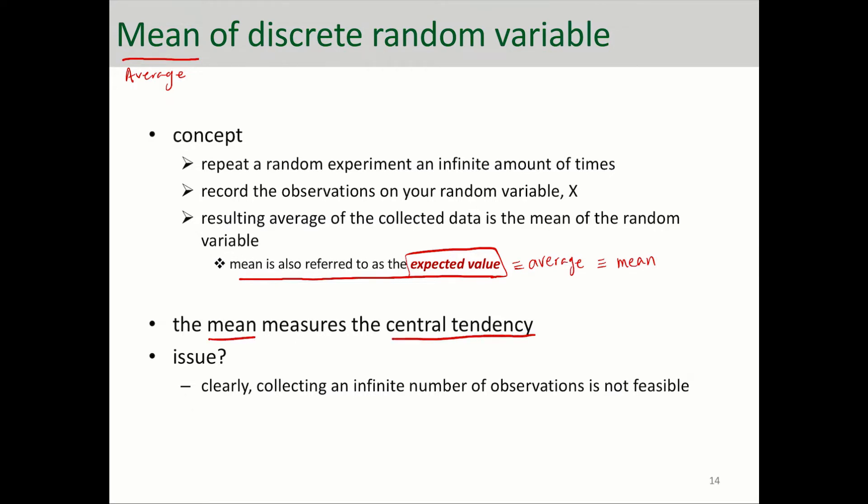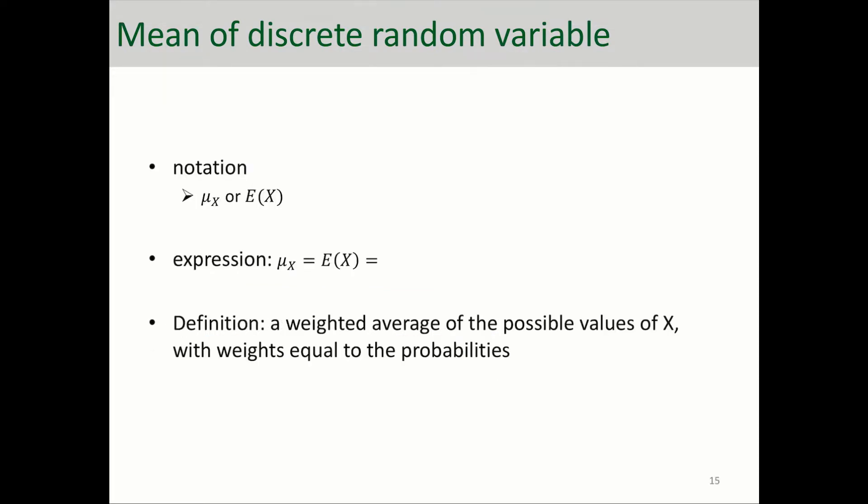As you're familiar with, the mean or average measures the central tendency of a random variable. What's the notation for average or mean of a random variable? It is μ_X or E(X), with X representing the random variable and μ representing mean or expected value of random variable X.